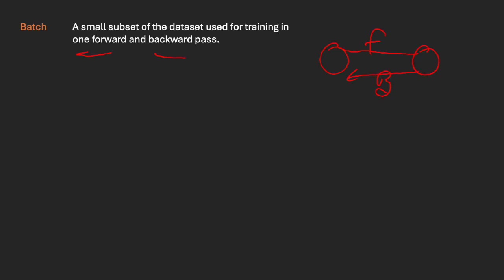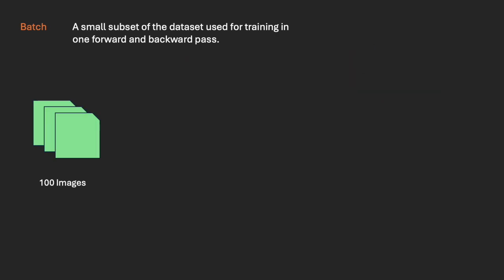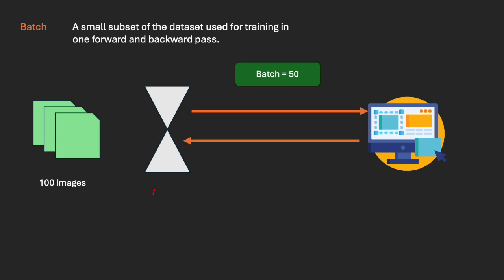Now let's try to understand batch, epoch, and iteration through an example. Suppose I have a dataset of 100 images, and using these 100 images I want to train an ML model to identify the contents inside the image. I will create this model M. I have created a batch size of 50, so in one go only 50 images will go.